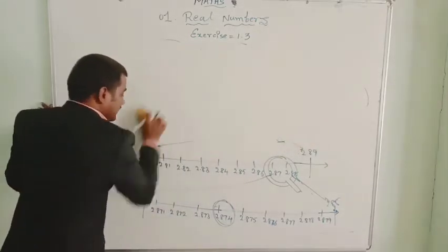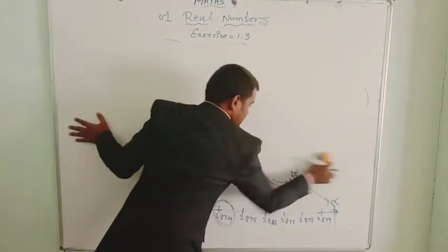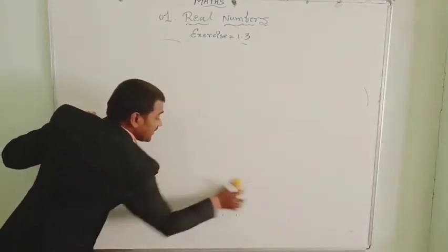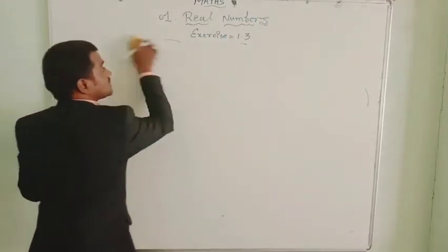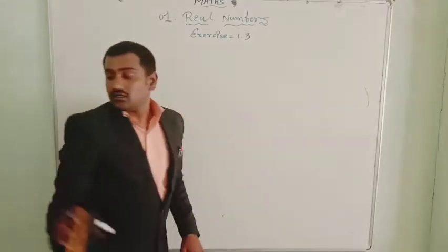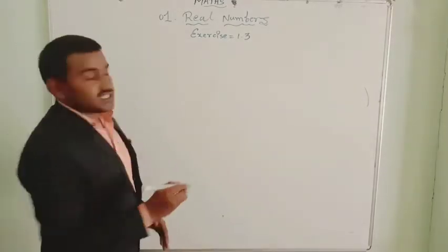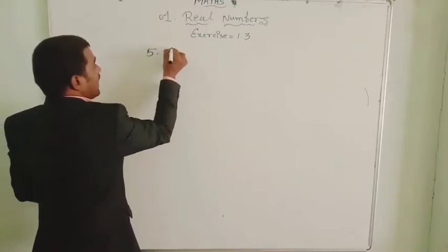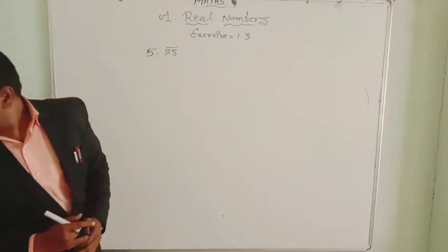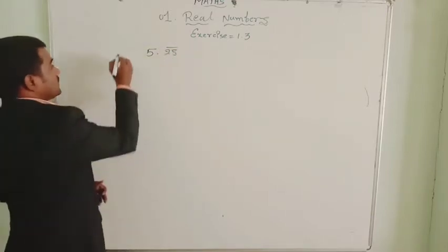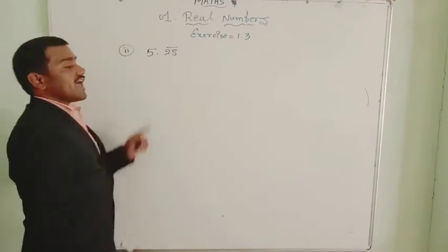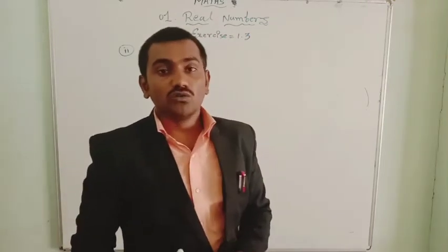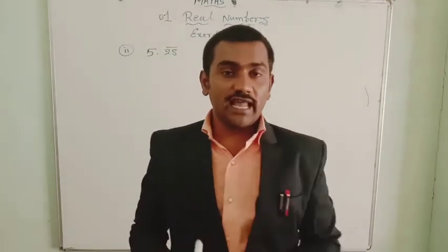Now let us represent non-terminating repeating decimal numbers on the successive magnification number line. The next question is: visualize 5.28 bar on the number line by using successive magnification.